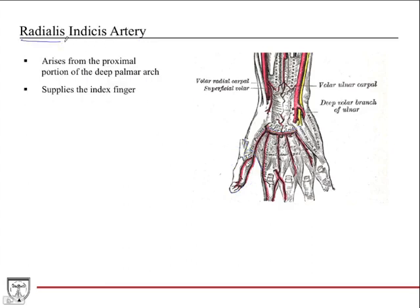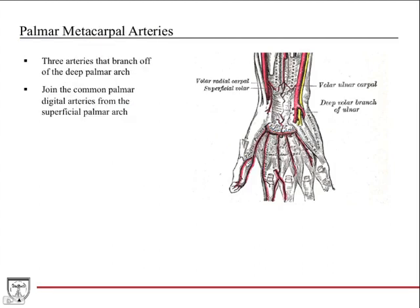The radialis indicis artery — radialis because of where it's coming from, and indicis is another name for the index finger or second digit. It arises from the proximal portion of the deep palmar arch, at the very beginning just distal to where the princeps pollicis artery comes off, and it is the main blood supply to the index finger. Then there are three palmar metacarpal arteries that branch off the deep palmar arch, and they join the common palmar digital arteries from the superficial palmar arch, converging at that point.